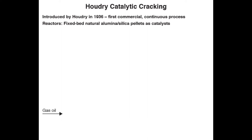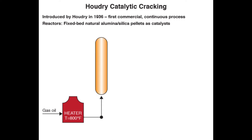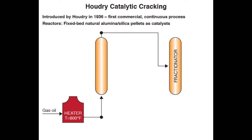The gas oil feed is heated in a fired furnace to 800 degrees Fahrenheit, and the feed is fed from the bottom of this packed bed to go through cracking on the catalyst surfaces.